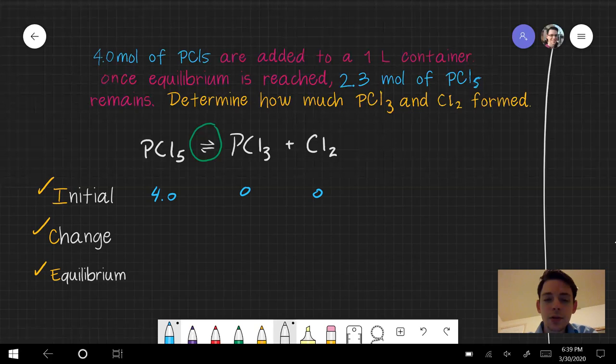So let's look at the change row. The change row is the most important row, and we don't really know much about the change row yet, so we're going to use a variable in place of the number for the change row. So if I look at this reaction, I see that one PCl5 forms one PCl3 and one Cl2. It's a 1 to 1 to 1 ratio.